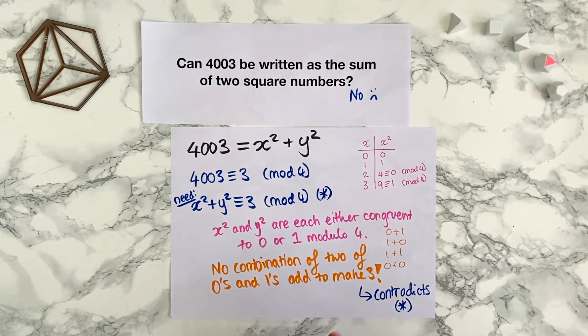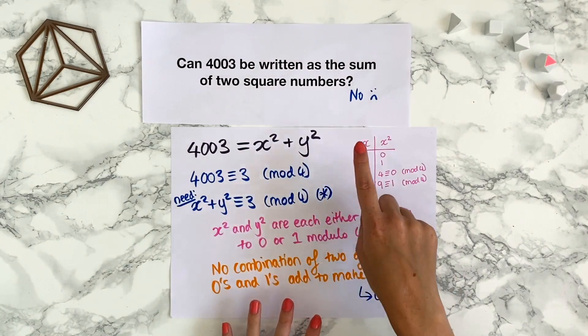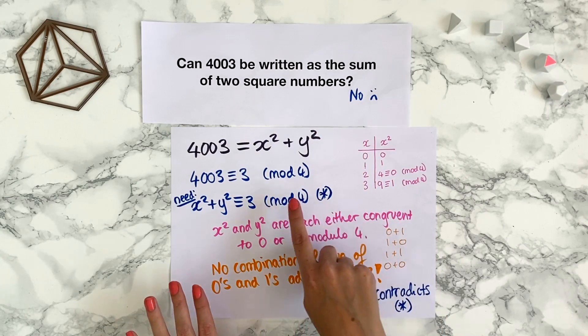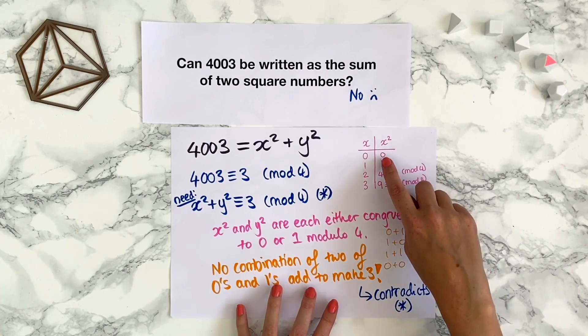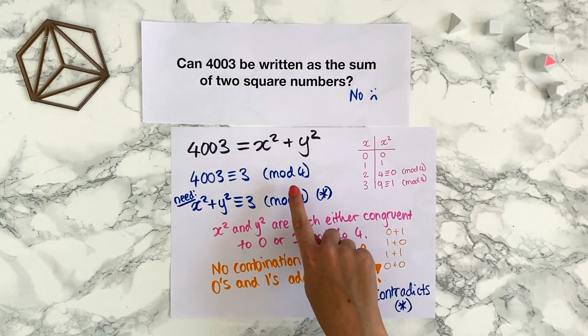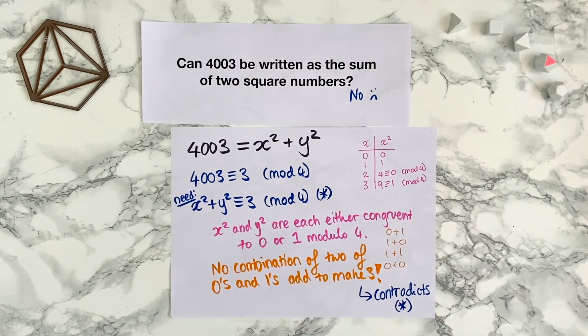But actually, the more of these questions you do, you'll realize that for proofs involving square numbers, modulo 4 is quite a good choice to make because of the fact that square numbers can only be 0 or 1 in modulo 4. So the more of these questions you see, the more you'll gain an intuition for which modulos are good to try for different questions.